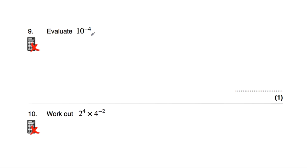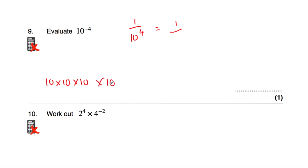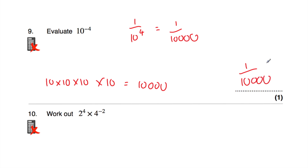Question 9: evaluate 10 to the power of negative 4. We do 1 over 10 to the power of 4. 10 times 10 times 10 times 10: 100, times 10 is 1,000, times 10 is 10,000. So the answer is 1 over 10,000. Note that 10 to the power of 4 is a 1 followed by 4 zeros.